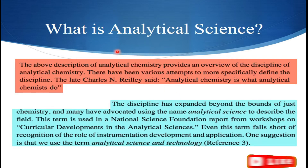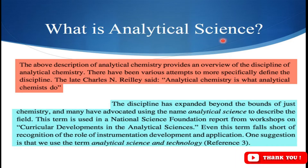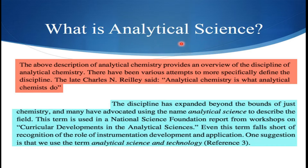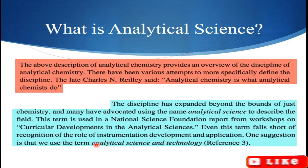Scientists have broadened the scope of analytical chemistry to analytical science because analytically we are not only restricted to chemical substances — it has found importance in agriculture and forensic sciences as well. Scientists argued that we should not restrict it to analytical chemistry but should use the word analytical science so it can cover a broader aspect. However, the word analytical science cannot fully cover the techniques or instruments used for identification and measurement, so the more accurate term suggested was analytical science and technology.